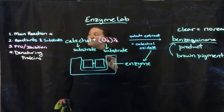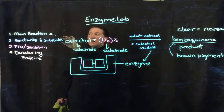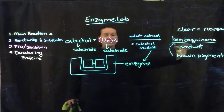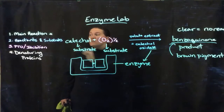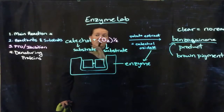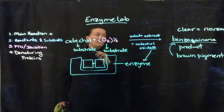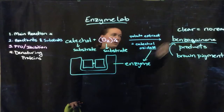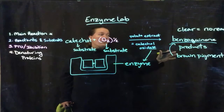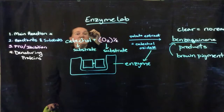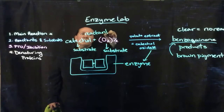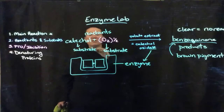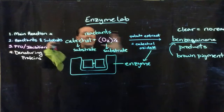So let's pause. Hopefully from that you got the main reaction: what a substrate is and what the reactants are. On this side you have reactants — called substrates — and then products over here, with our main product being benzoquinone. Substrates and reactants are the same thing, so they are on this side of the reaction.